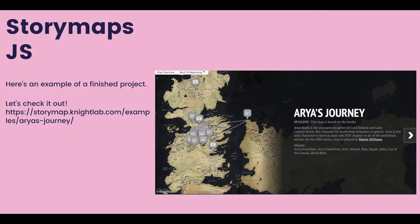As you can see in this example, StoryMaps.js allows you to add in mixed media to help you tell your story. For example, this is on the topic of Arya, a character in Game of Thrones, and it maps out on top of a map of the world from Game of Thrones the different locations she goes to and events that happen within her journey.